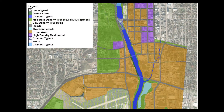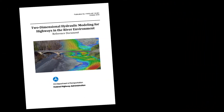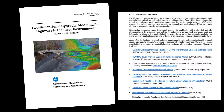Manning's n-values are assigned to each land use area and can be determined from several resources listed in the 2D reference document. Existing n-value resources were developed for application on 1D models. Because 2D models account for several 1D model assumptions, differences in n-values of up to 10 to 15% have been observed based on calibration data using 2D models. In some cases, the differences could be greater. More research is needed and is ongoing to assess differences between the two types of models and develop improved guidance.